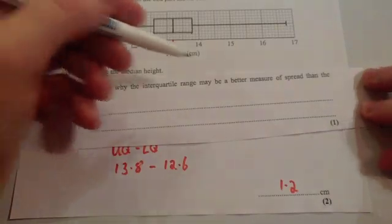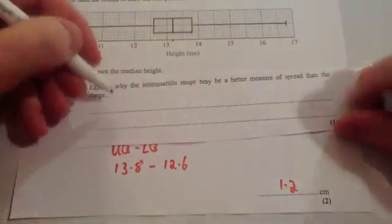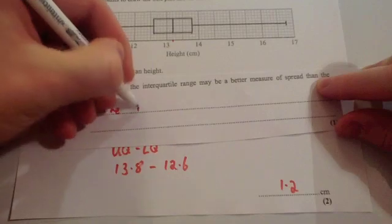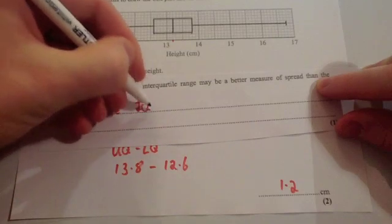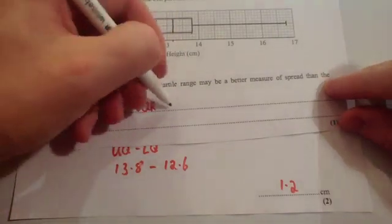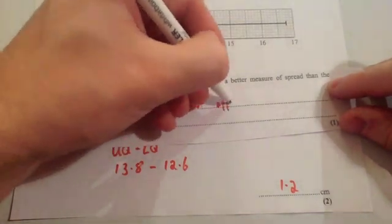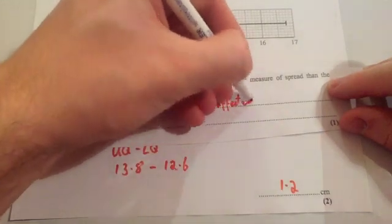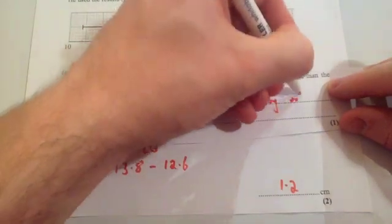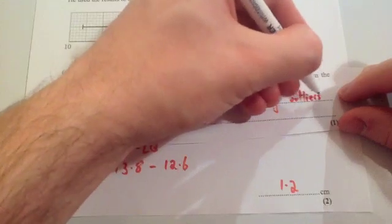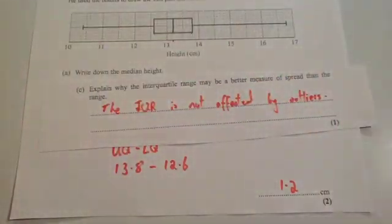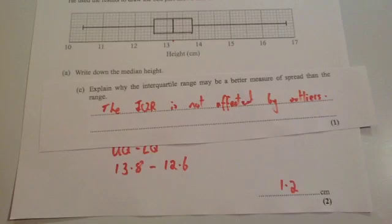Explain why the interquartile range may be a better measure of spread than the range: the interquartile range is not affected by outliers. If you've got an anomalous result or an outlier, it's going to affect the range, but the interquartile range wouldn't be affected by it. That's why the interquartile range may be a better measure of spread.